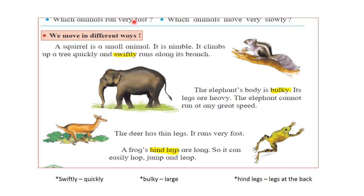Which animal runs very fast? The cheetah is the fastest running animal, and the ostrich is the fastest running bird. Which animals move very slowly? The tortoise and the elephant move very slowly. A squirrel is a small, nimble animal — it climbs up a tree quickly and swiftly runs along its branches, going from tree to tree very easily.